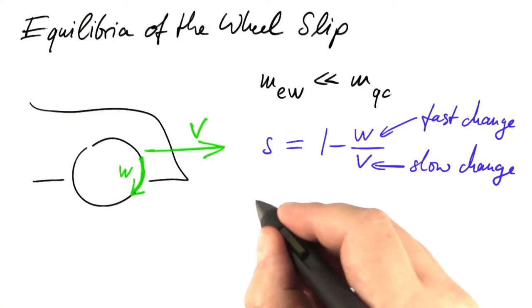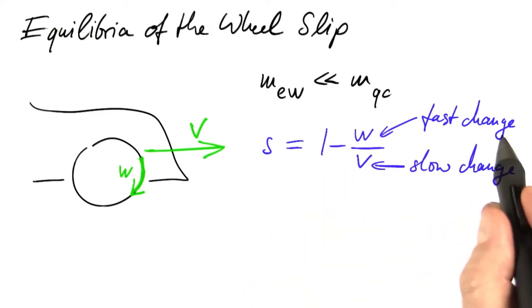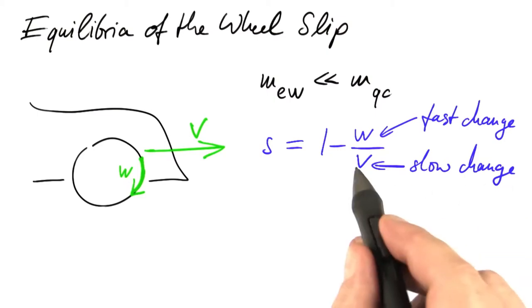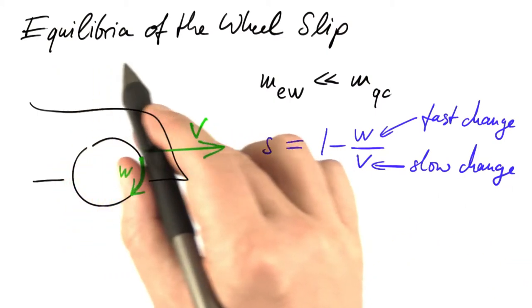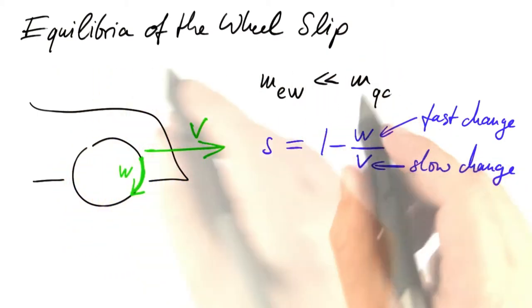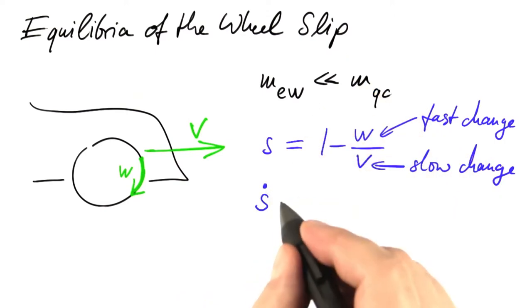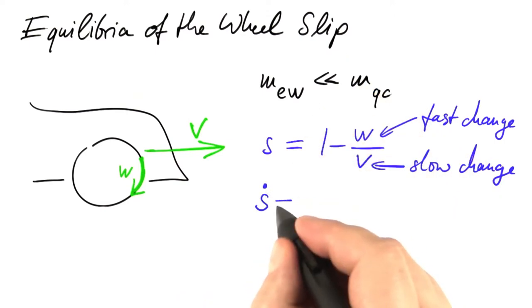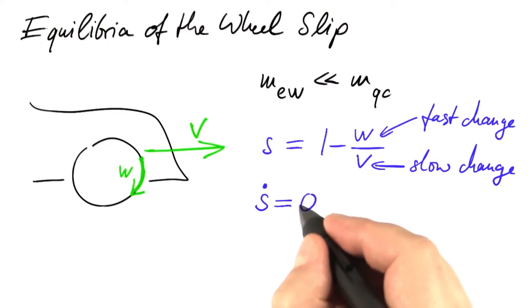But assuming that the velocity of the car is almost constant, this idea about a fast changing w and a slowly changing v helps us to think about the equilibria of the wheel slip. If that wheel slip reaches an equilibrium, its rate of change becomes zero. It does not change anymore.